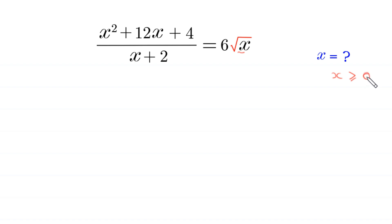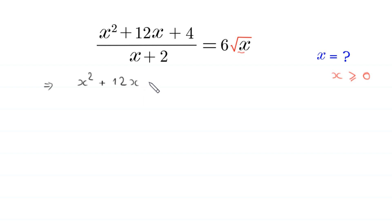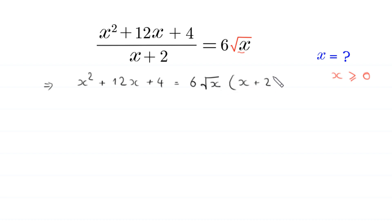Now, if we multiply both sides by x plus 2, this implies that x squared plus 12 times x plus 4 is equal to 6 times root x times x plus 2.